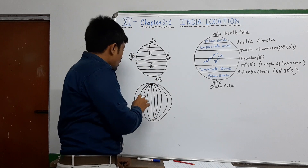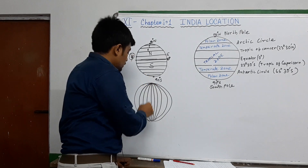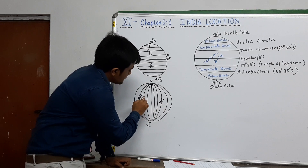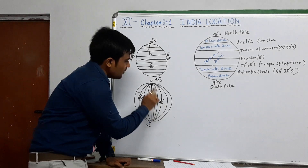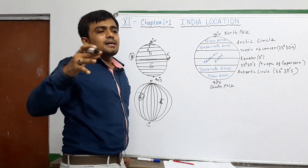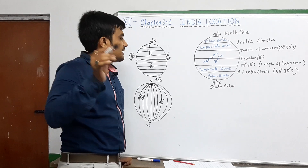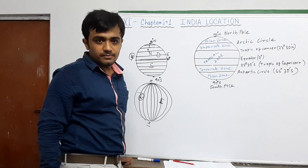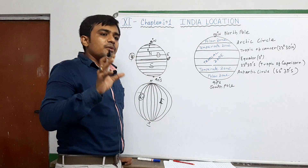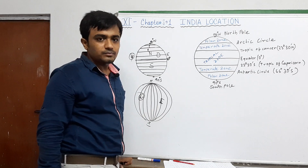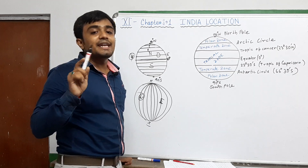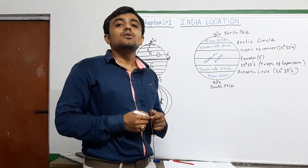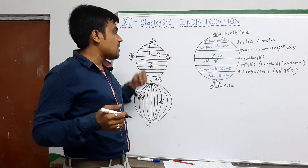Longitudes are also imaginary lines that extend from north to south but divide the earth into east and west. By latitudinal extension we can identify any country's location. India is situated in the northern hemisphere. By longitudes we can also measure location and calculate time. India's standard meridian is 82°30' E, which passes through Allahabad/Mirzapur in Uttar Pradesh.